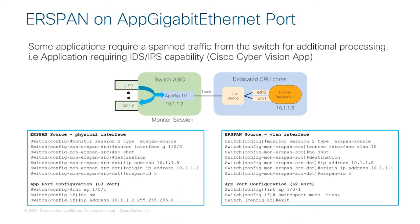To continue to innovate in our app hosting capability, starting from 17.10, ERSPAN on the app gig port on the Catalyst 9300 and the Catalyst 9400 is now supported. This allows for the mirroring of data traffic from the device to the application that runs on top of the app gig port using the IOX capabilities.